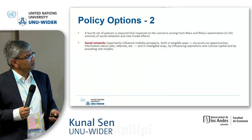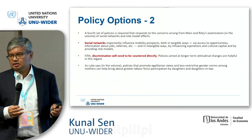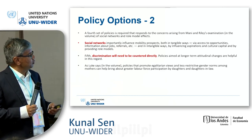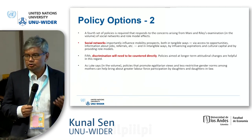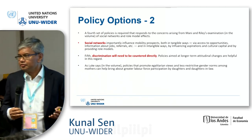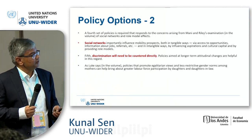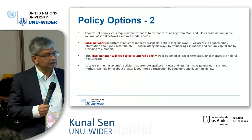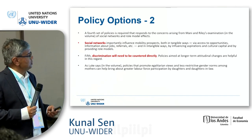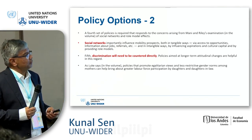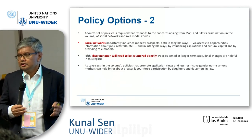There were other things from the volume not being discussed as much in the policy literature. We felt social networks make a big difference in low-income country contexts — who you know, peer effects, neighborhood effects are all very important. The chapter by Emma Riley and Anandimani shows the importance of social networks very clearly. For example, job referrals, intangible ways of influencing aspirations, cultural capital, and providing role models are really important in thinking about mobility.